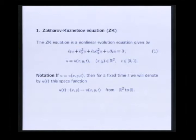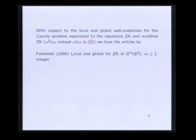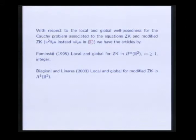With respect to the local and global well-posedness for the Cauchy problem associated to the equation ZK and modified ZK, for the modified ZK the nonlinear term is U squared DX U. In 1995, Faminskii proved local and global well-posedness for the ZK in Sobolev spaces H^m with m integer greater than or equal to 1. Later, Biagioni and Linares proved local and global well-posedness for modified ZK in H^1.